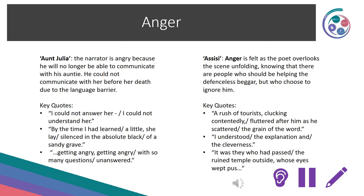In Assisi, anger is felt as the poet overlooks the scene, knowing there are people who should be helping the defenceless beggar but who choose to ignore him. Key quotes: 'A rush of tourists clucking contentedly, fluttered after him as he scattered the grain of the word', 'I understood the explanation and the cleverness', and 'it was they who had passed the ruined temple outside, whose eyes wept pus.' The theme of grief: in Aunt Julia, the poem focuses on the grief the persona feels after the death of his auntie. Key quotes: 'By the time I had learned a little, she lay silenced in the absolute black of a sandy grave', 'But I hear her still, welcoming me with a seagull's voice', and 'getting angry, with so many questions unanswered.'